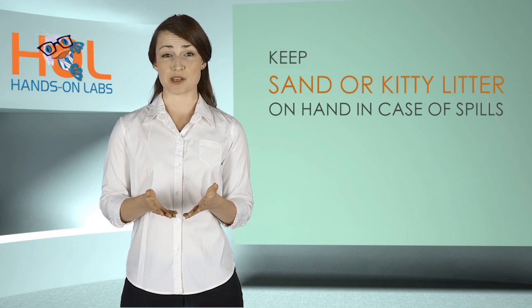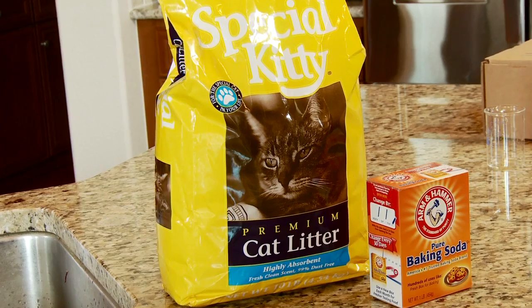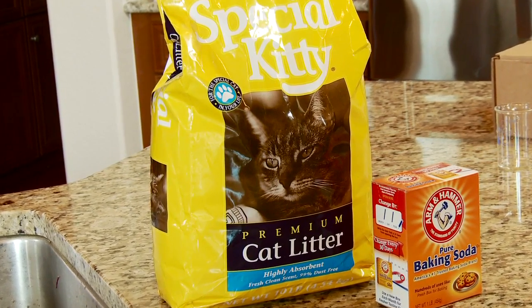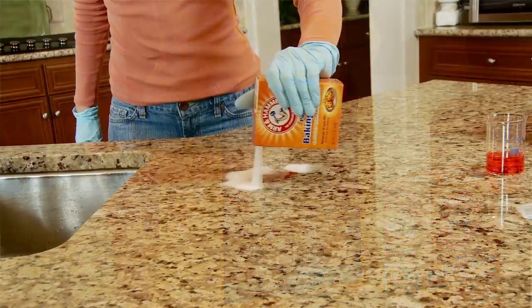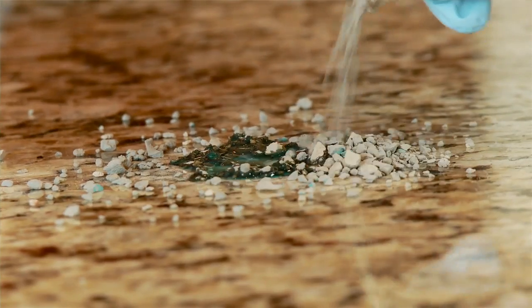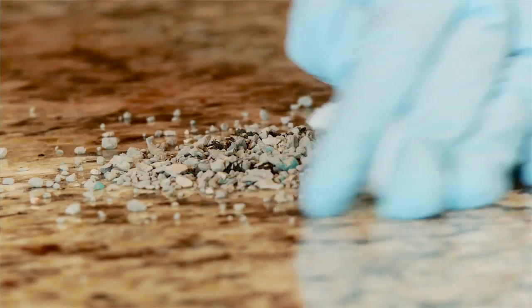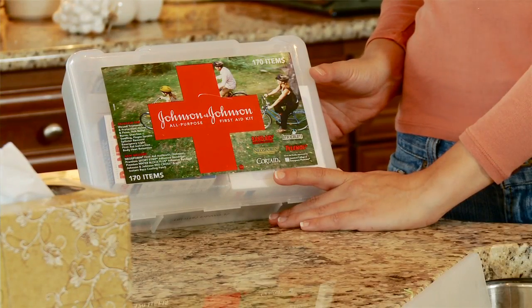For experiments using chemicals, keep a bag of sand or kitty litter on hand to absorb and contain any chemical spills. Keep sodium bicarbonate baking soda on hand to neutralize spilled acids before attempting to wipe them up. Concentrated acids can cause serious burns, so neutralize them before cleanup to help to prevent a painful injury. It's also a good idea to have a first aid kit handy.